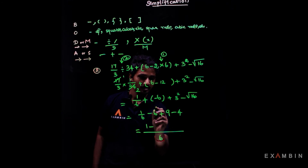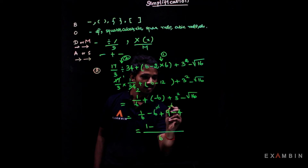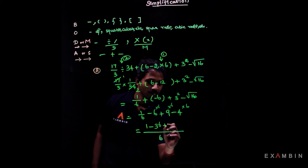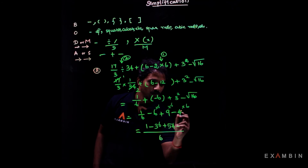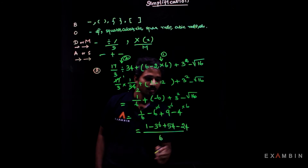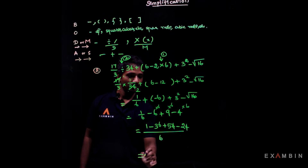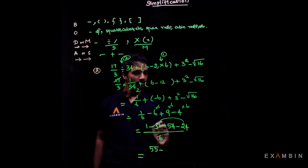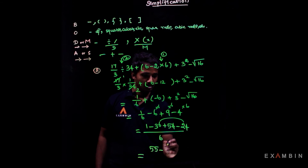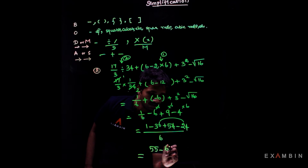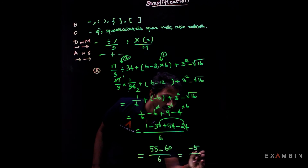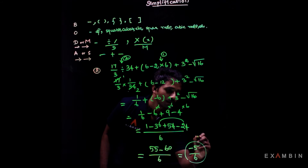Taking 6 as common denominator, we multiply each term by 6: giving us 1, 36, 54, and 24 respectively. Solving this we get 55 minus 50 plus 10, and 60 divided by 6 equals minus 5 by 6. So this is the correct answer.